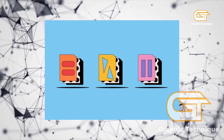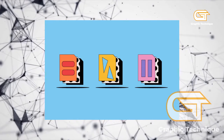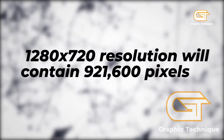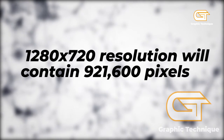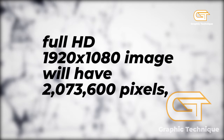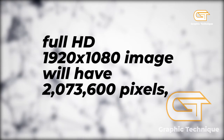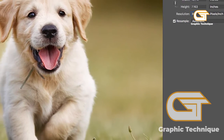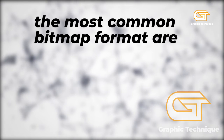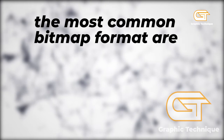The file size of a raster image depends on the size of the image, which is determined by the number of pixels being used. This means that an image with a 1280 by 720 resolution will contain 921,600 pixels, while a full HD 1920 by 1080 image will have 2,073,600 pixels, which will obviously give it a bigger file size. The most common bitmap formats with their extensions are: